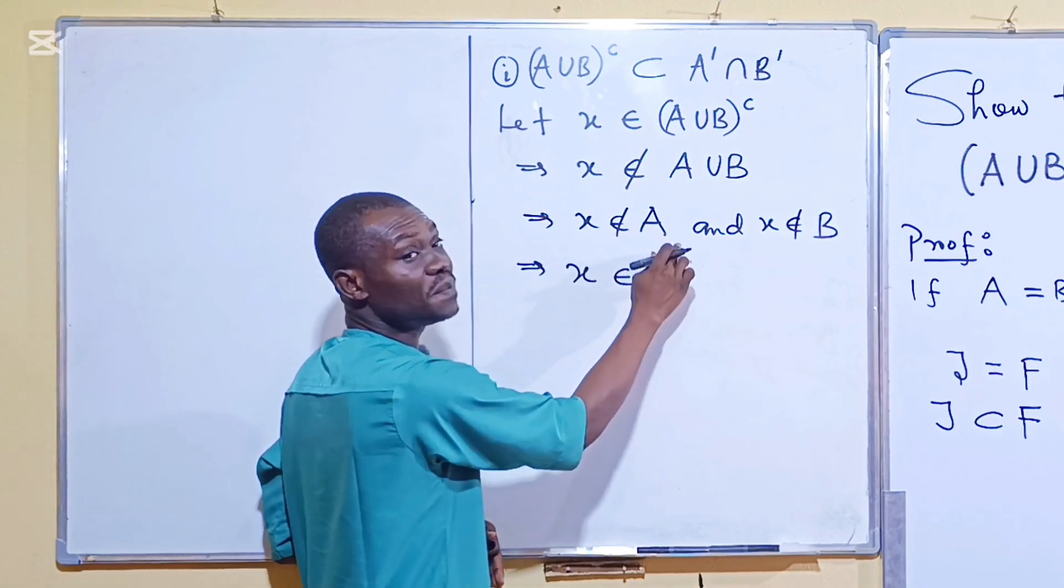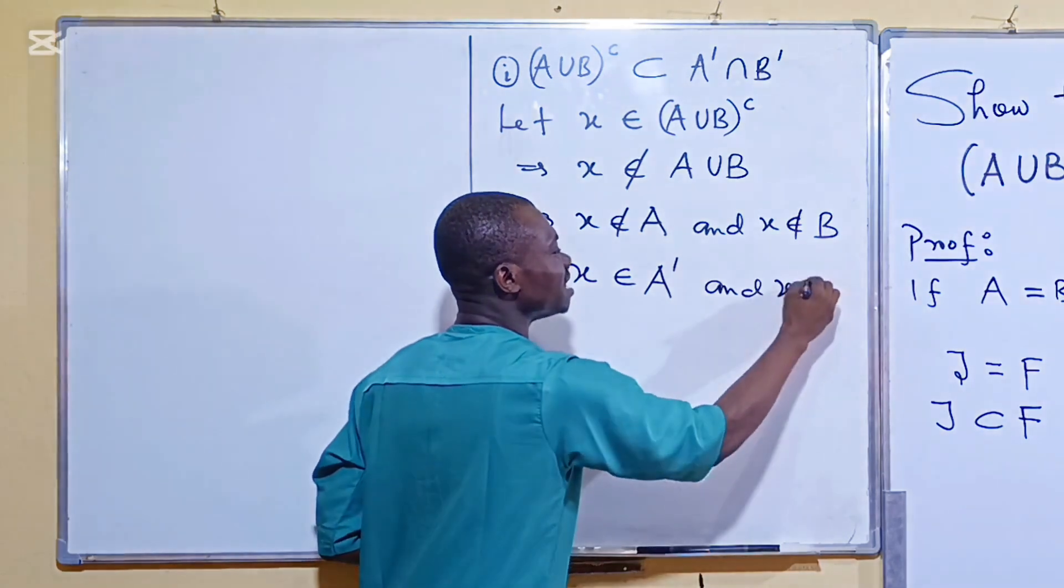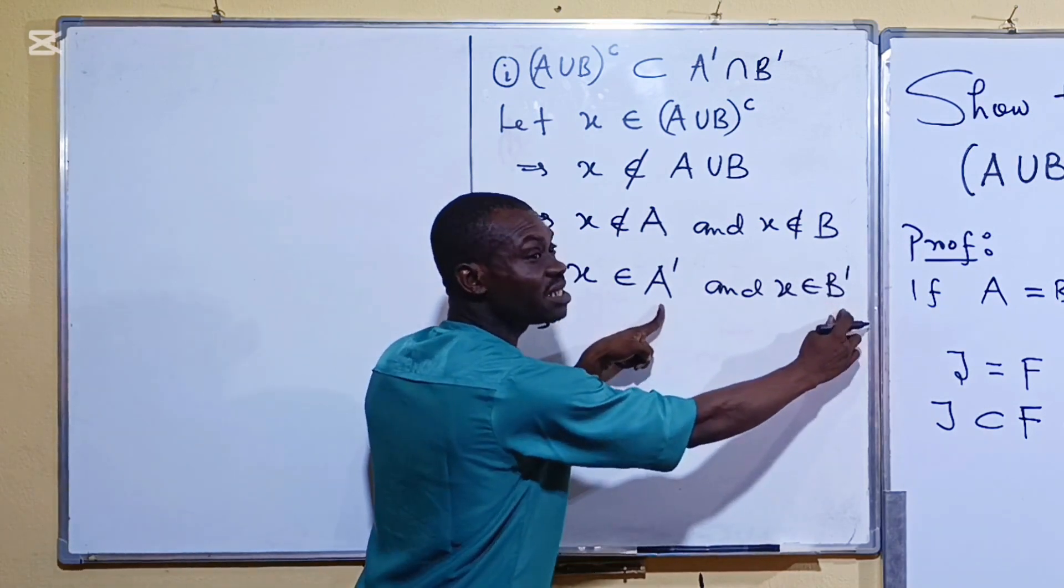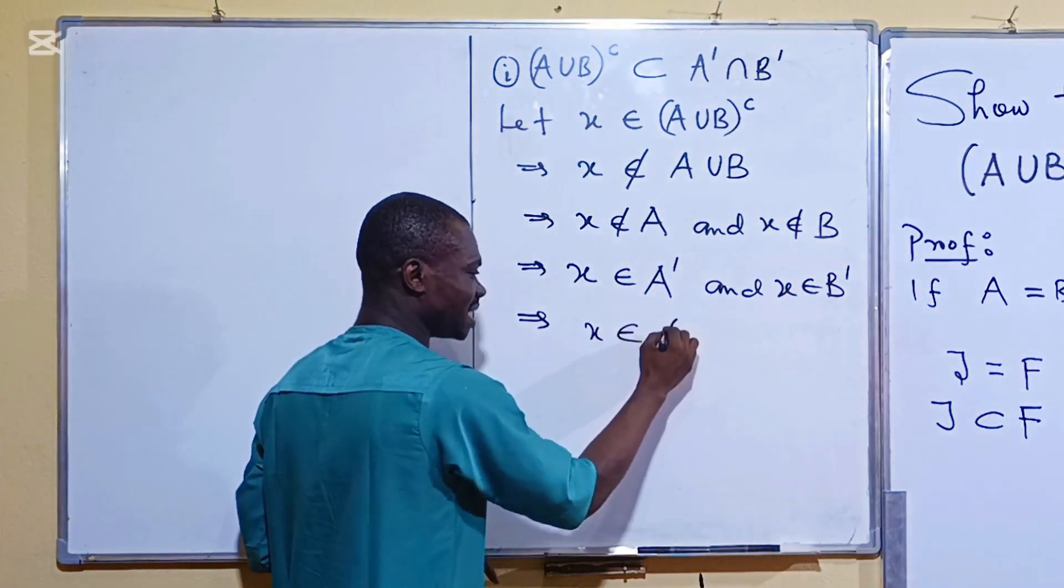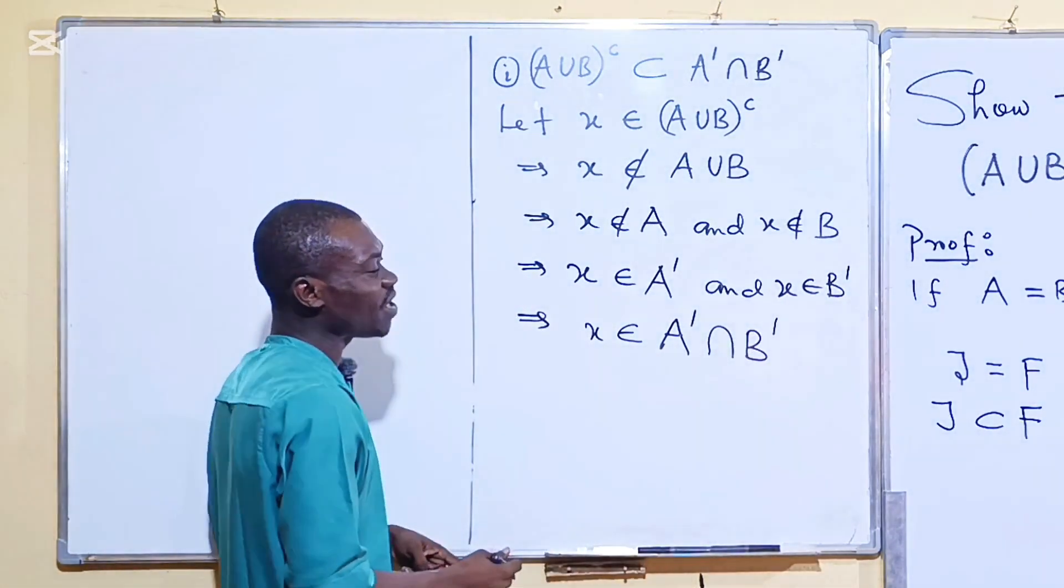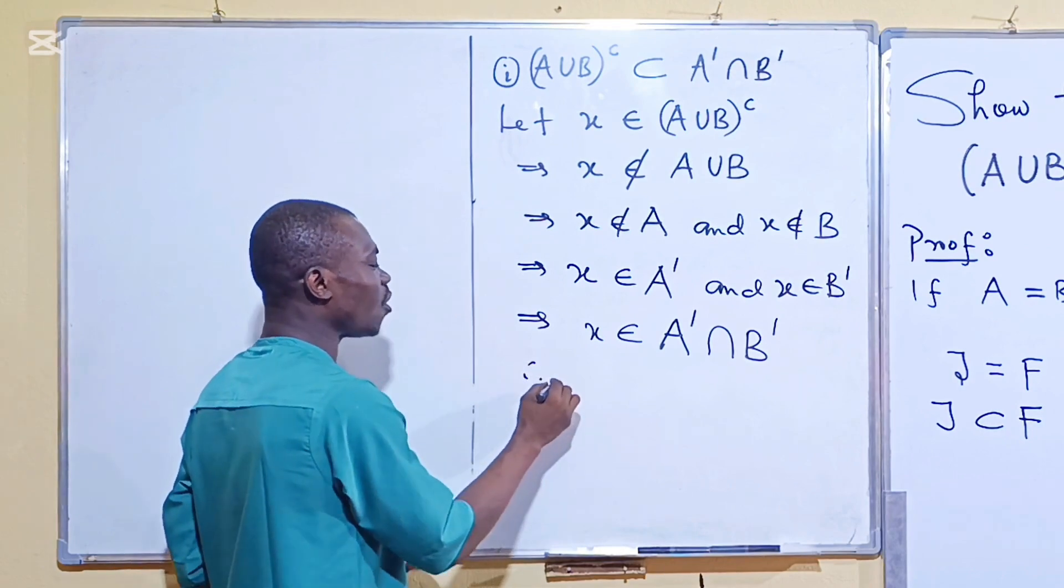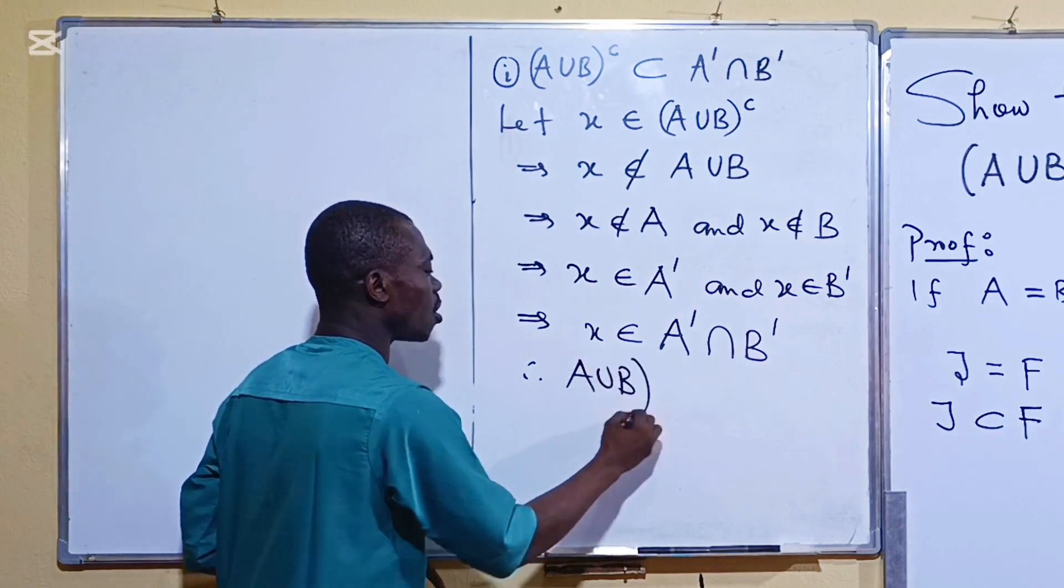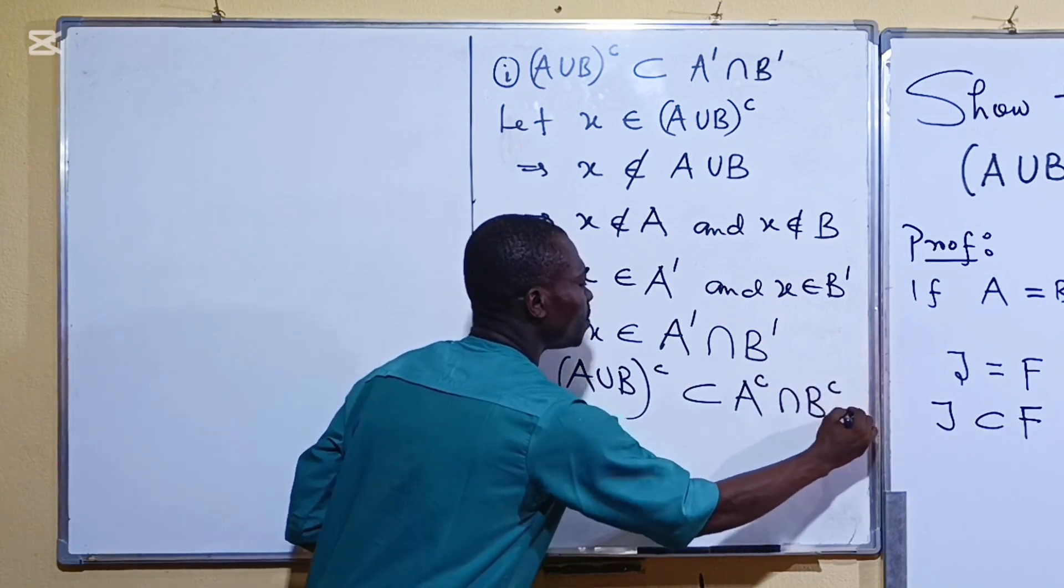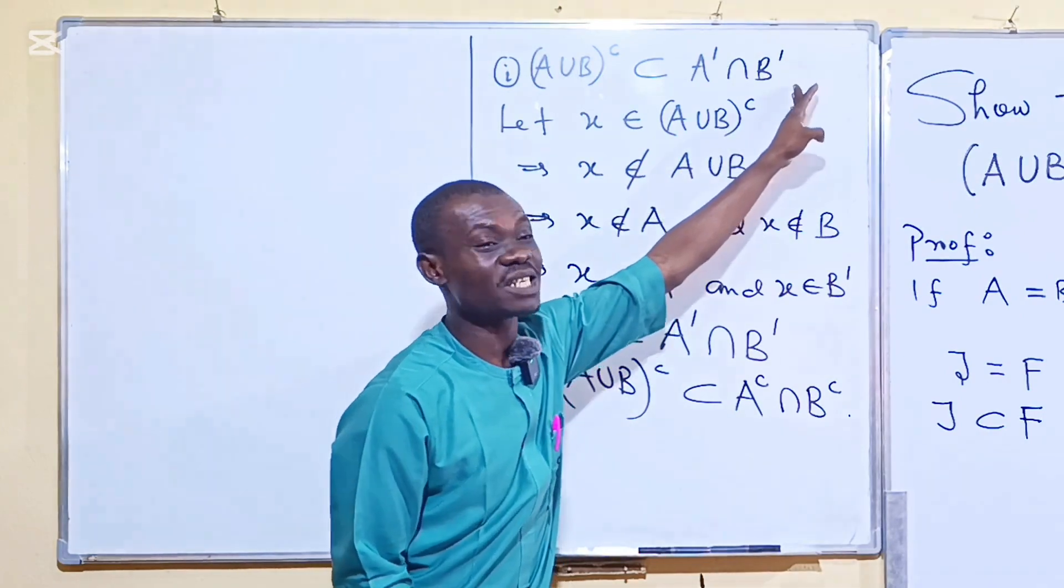X not in A simply means that X is in A complement and then the same thing happens here. X is also in B complement and whenever an element is in two sets then it simply means that that element is in the intersection of those two sets. So I have completed the proof that X is in A complement intersection B complement. Therefore my A union B complement is a subset of A complement intersection B complement. So you have gotten the first part of the proof that what you have here is a subset of this.